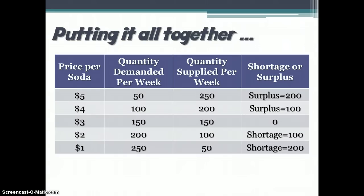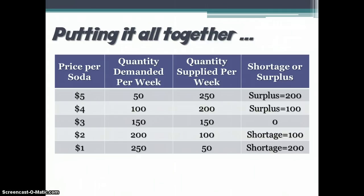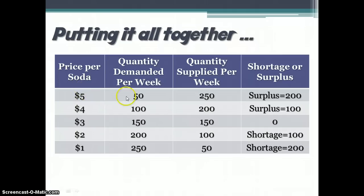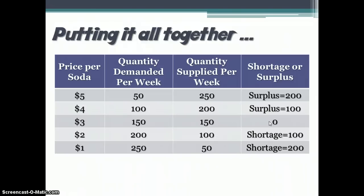We can put the supply schedule and the demand schedule together to create a supply and demand graph that shows us the equilibrium price and quantity. For example, with soda: at $5 per can, people demand 50 cans per week but suppliers provide 250, leaving a surplus of 200 cans. At $4, 100 cans are demanded and 200 are supplied — a surplus of 100. At $3, 150 cans are both demanded and supplied — no shortage, no surplus. That is equilibrium.